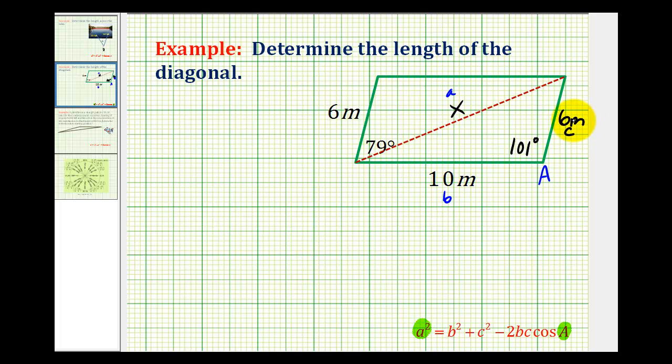And now we can determine the length of the diagonal using the law of cosines. We would have x squared equals 10 squared plus 6 squared minus 2 times 10 times 6 times cosine 101 degrees.